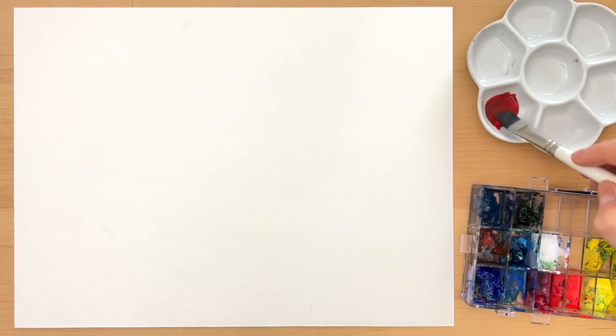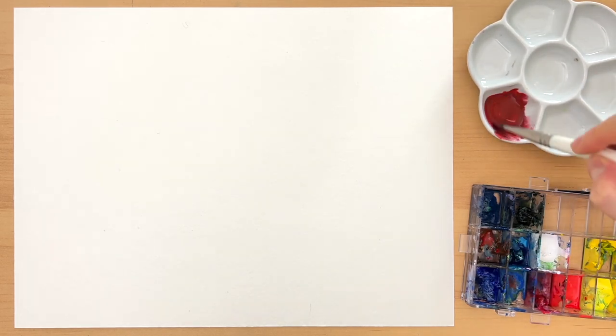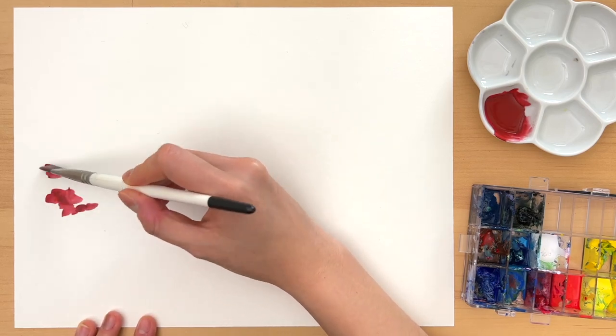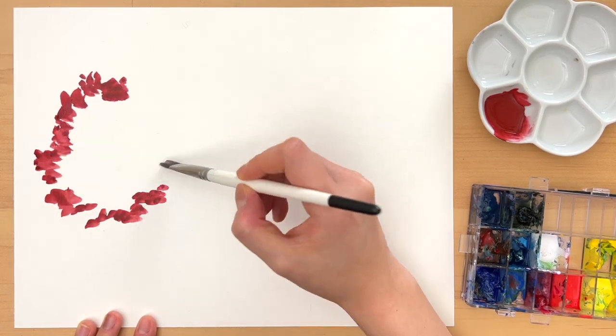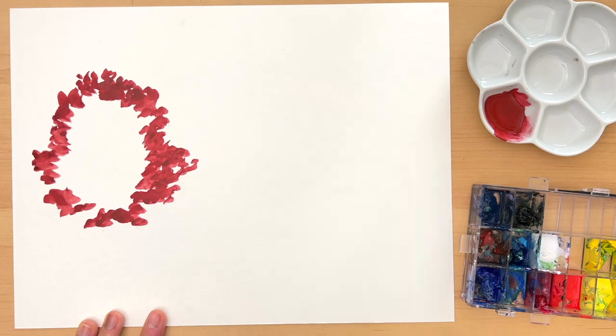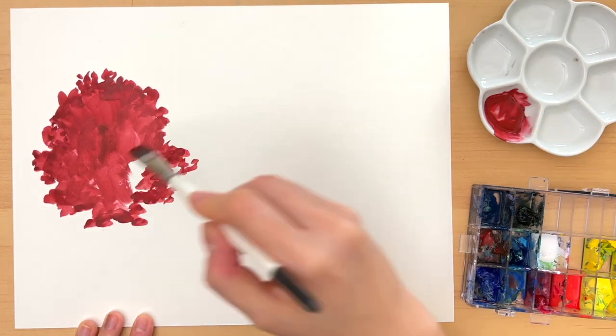So when I paint trees, I usually start by mixing the base color of the tree and then putting down the outline of the silhouette. Once I'm happy with the silhouette, I use that base color to fill in the middle part.